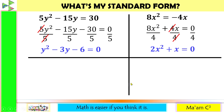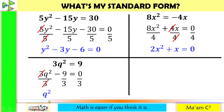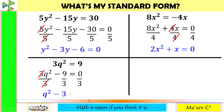Let us have some more. Move 9 to the other side and equate this to 0. Both are divisible by 3, so let us divide everything by 3. The 3's cancel, giving us q squared. Negative 9 divided by 3 equals negative 3, and 0 divided by 3 is still 0.